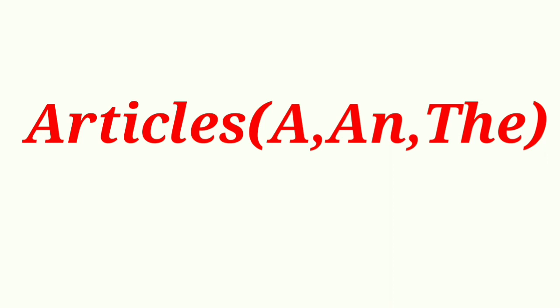A, an, and the are called articles. Articles are used with nouns. A and an mean one and are placed before countable nouns in the singular number. We use A before words beginning with a consonant sound and AN before words beginning with a vowel sound. We use A or AN when we mean any person or thing, but we use THE when we mean a particular person or thing. Don't use articles with proper nouns, nouns that name materials, or nouns that name abstract qualities.